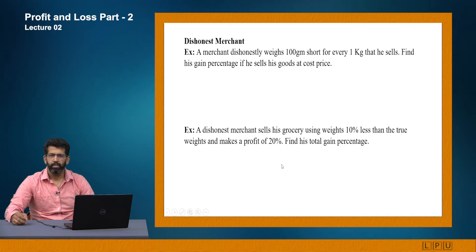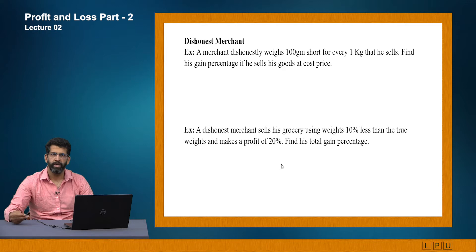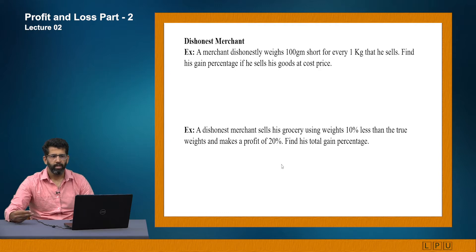The first topic is dishonest merchant. A dishonest merchant is one who actually weighs less than what his machine shows. For example, if I am selling you one kg of apples, my weighing machine is showing one kg, whereas the actual weight is 800 grams. In that scenario, the merchant is going to earn more profit. Let's discuss this in the form of two examples.